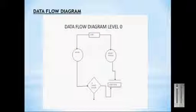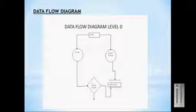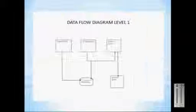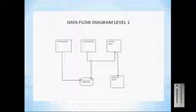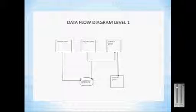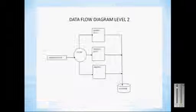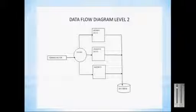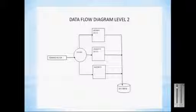The data flow diagram: this is the level 0 diagram where login and registration takes place. This is level 1, where user-level functions take place — the user inserts data, accesses data, and searches data. The administrator can also modify, report, validate data, and store it in the database.